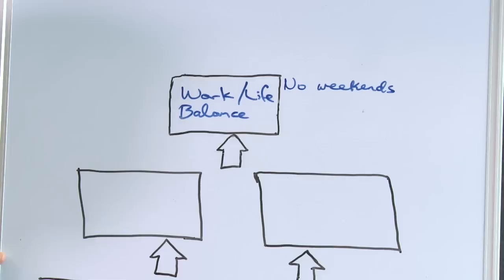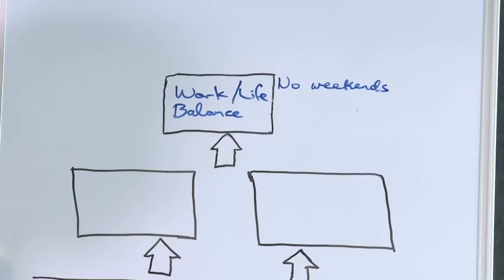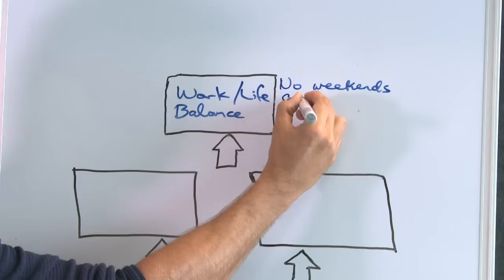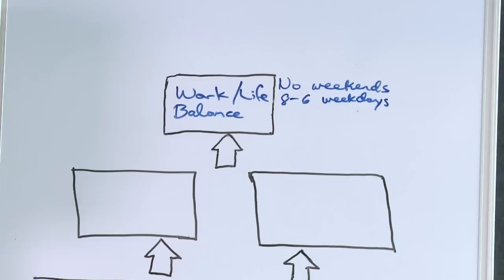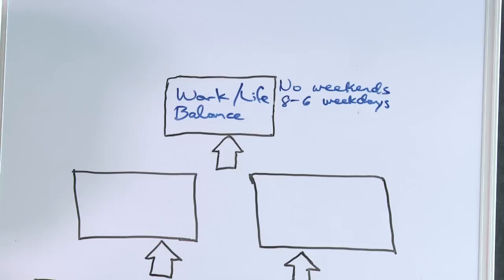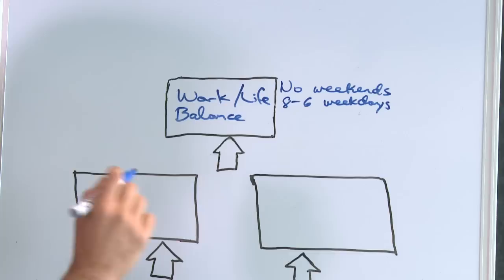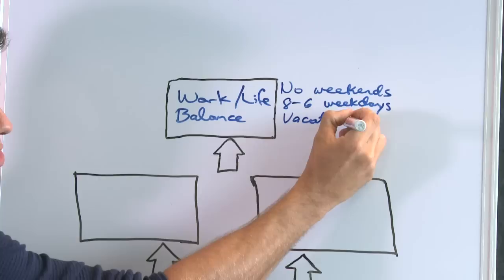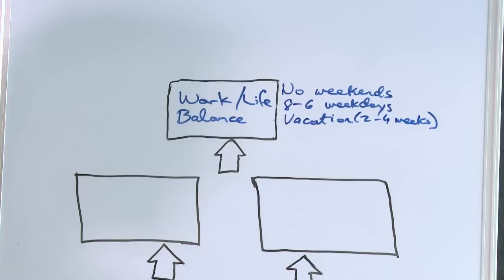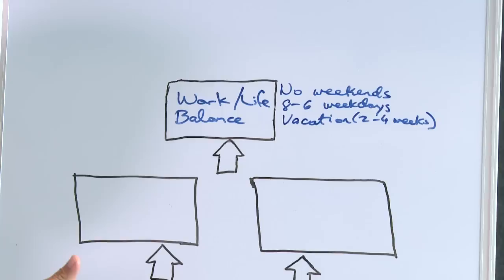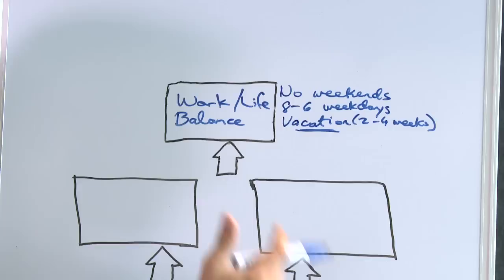He wants to spend that weekend enjoying his kids, being with his wife, doing activities with friends, or pursuing hobbies and leisure. That's one element. Second, during the week he only wants to work eight to six on weekdays — he doesn't want to work five in the morning to midnight and then have a free weekend, as that defeats the whole purpose. And lastly, probably most importantly, he wants to be able to take a vacation each year — let's say two to four weeks — where he gets away from the business.